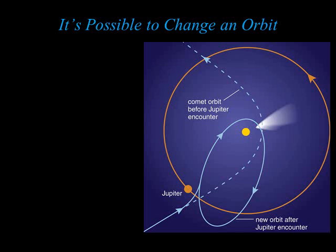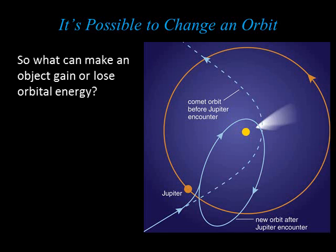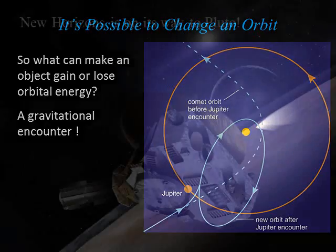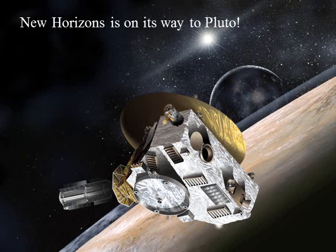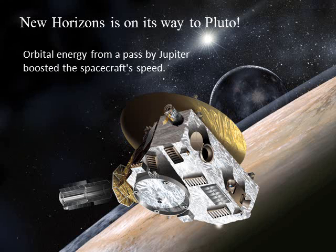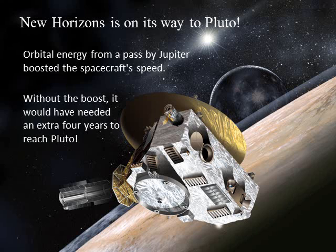Left undisturbed, planets and everything else would keep the same orbits forever and ever. Orbits cannot change spontaneously, but they can change through exchanges of energy. One way that two objects can exchange orbital energy is through a gravitational encounter, in which they pass near enough so each can feel the effects of the other's gravity. For example, in the rare case in which a comet happens to pass near a planet, the comet's orbit can change dramatically. This figure shows a comet headed towards the sun on an unbound orbit. The comet's close passage by Jupiter allows the comet and Jupiter to exchange energy. Spacecraft engineers use this idea in reverse. For example, on its way to Pluto, the New Horizons spacecraft was deliberately sent past Jupiter on a path that allowed it to gain energy at Jupiter's expense. This extra orbital energy boosted the spacecraft's speed. Without the boost, it would have needed an extra four years to reach Pluto.